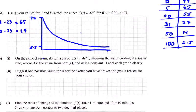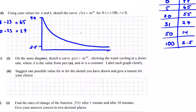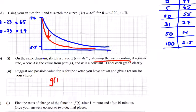Then the next part, on the same diagram, sketch the curve, G of T is equal to Ae to the power of Mt, showing the water cooling at a faster rate. So if it cools at a faster rate, the graph is going to come down like this. So is it cooling faster? Of course, as you can see here, this graph is below this one. It's definitely cooling faster. And suggest one possible value for M. You have drawn and give a reason. Well, what we want to do here is, let's just test two values.